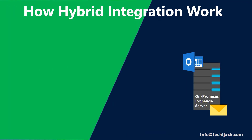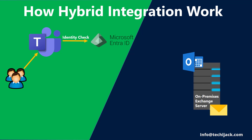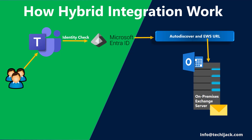Let's see how this hybrid integration works. Imagine your mailbox is still on Exchange 2019 or 2025 in your data center, and you open Teams from home. When you click on the Calendar, the process that works in the background is: first, Teams checks your identity in Entra ID; then Teams uses Autodiscover to locate your mailbox; then Teams sends a calendar request via EWS — Exchange Web Services. Your Exchange responds using an OAuth token, which is modern authentication. And your calendar appears in Teams even though all your mailbox data is still in your on-premises data center.